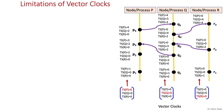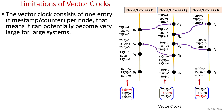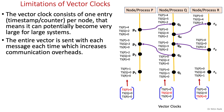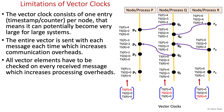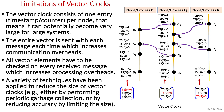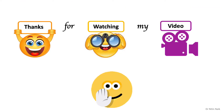Finally, some limitations of the vector clock: the vector clock consists of one entry per node, meaning it can potentially become very large for large systems. The entire vector is sent with each message, which increases communication overhead. All vector elements have to be checked on every received message, which increases processing overhead. A variety of techniques have been applied to reduce the size of vector clocks, for example by performing periodic garbage collection or by reducing accuracy by limiting the size. This concludes the presentation — thanks for watching.